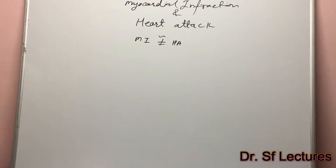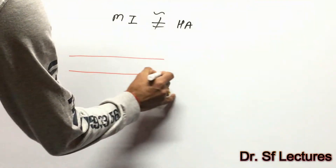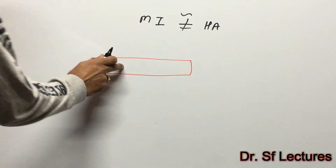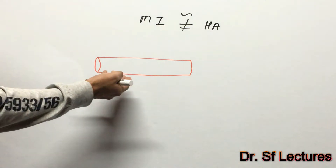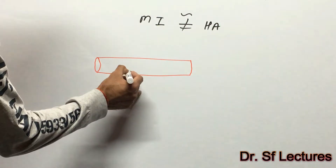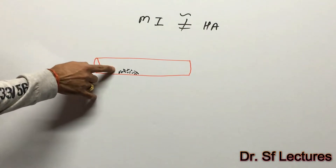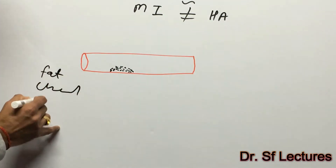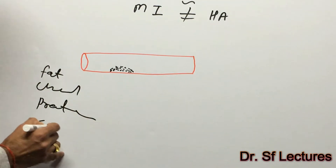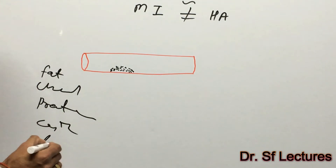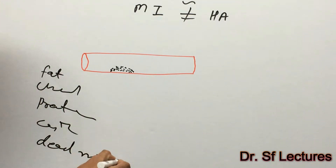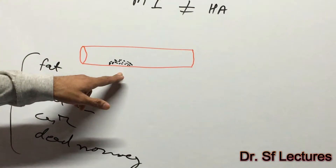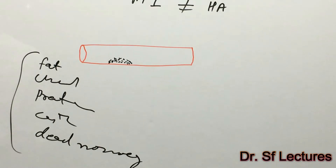What is myocardial infarction? Myocardial infarction is the acute process involving the heart. Here is the coronary artery, which we discussed in the previous lecture. There is atherosclerosis plaque — we already discussed how that forms. This plaque contains cholesterol, protein, calcium, and monocytes. We already discussed how this plaque forms in our coronary artery.